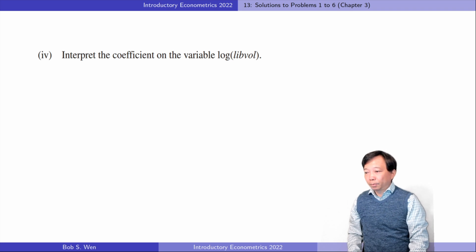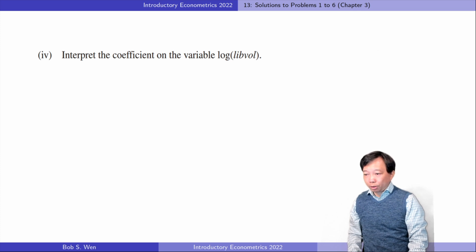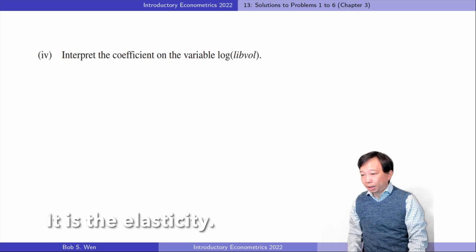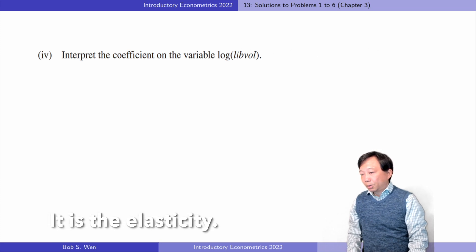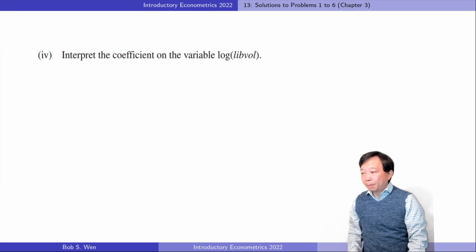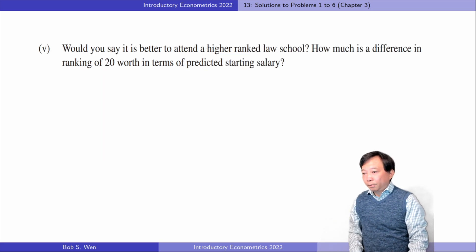For the fourth question, when the outcome variable and explanatory variable are both in the log form, the coefficient indicates the percentage change of the outcome variable with respect to a one percent change in the explanatory variable. So, the median starting salary increases by 0.09% if the library volumes increase by one percent on average. In other words, the salary increases by nearly one percent with a 10% increase in the library volumes, other things equal.